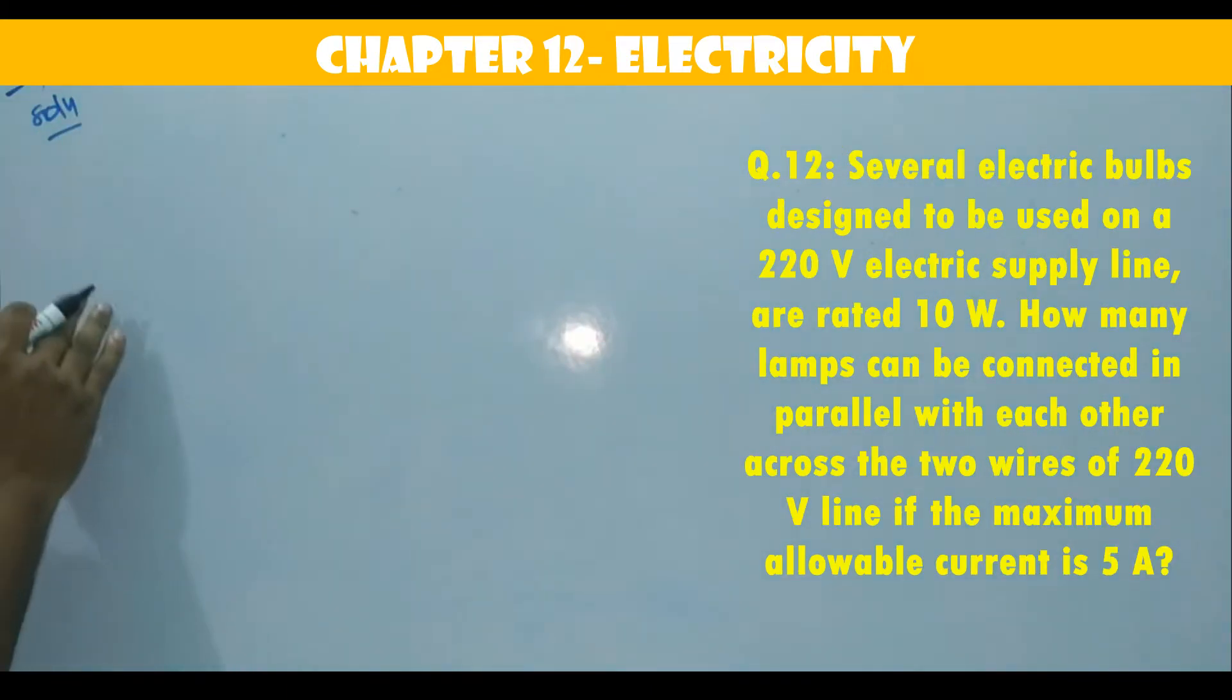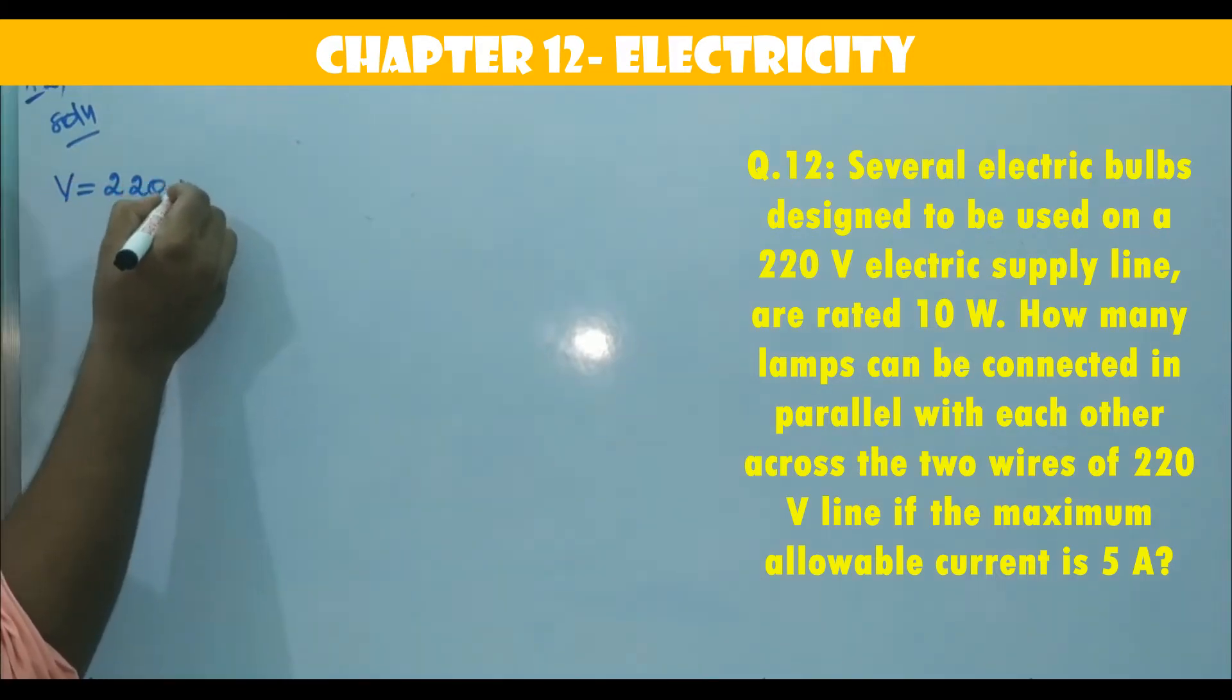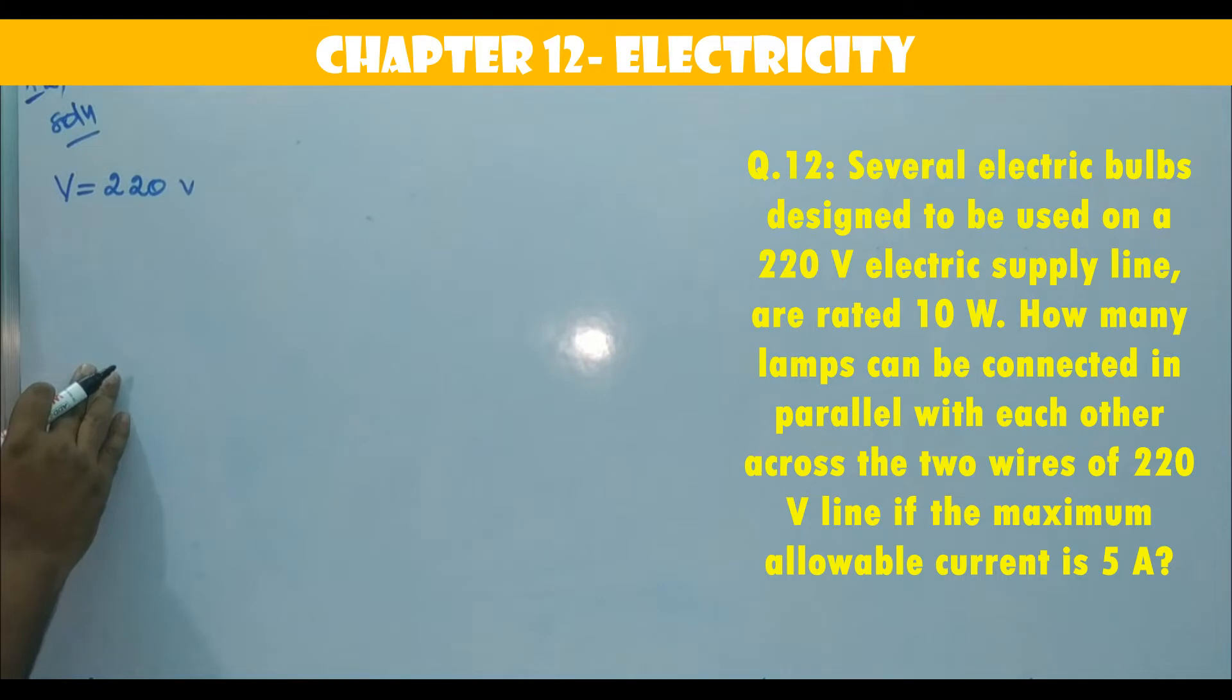So, in this question, several bulbs are designed to be used on 220 volt electric supply. Power of each bulb is 10 watt. How many lamps can be connected in parallel with each other to the wires of 220 volt line? They are asking how many bulbs can be connected parallel if the maximum allowable current is 5 ampere. So, if we get 5 ampere current, how many lamps can be connected parallel to the wire? That is the question.